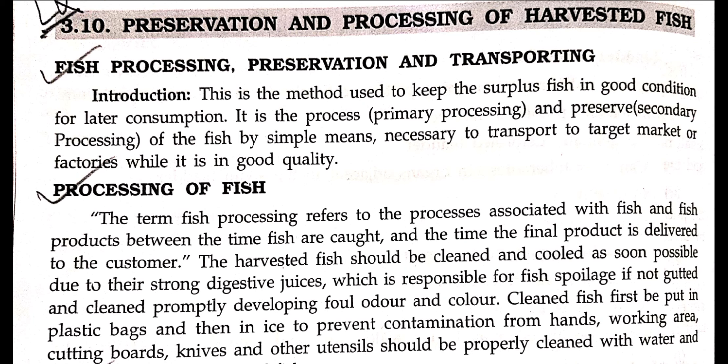Aquaculture 1 is called preservation and processing of harvested fish. The fish will be preserved as well as processed and used. This is the method used to keep surplus fish in good condition for later consumption, if you want to keep it for many days.